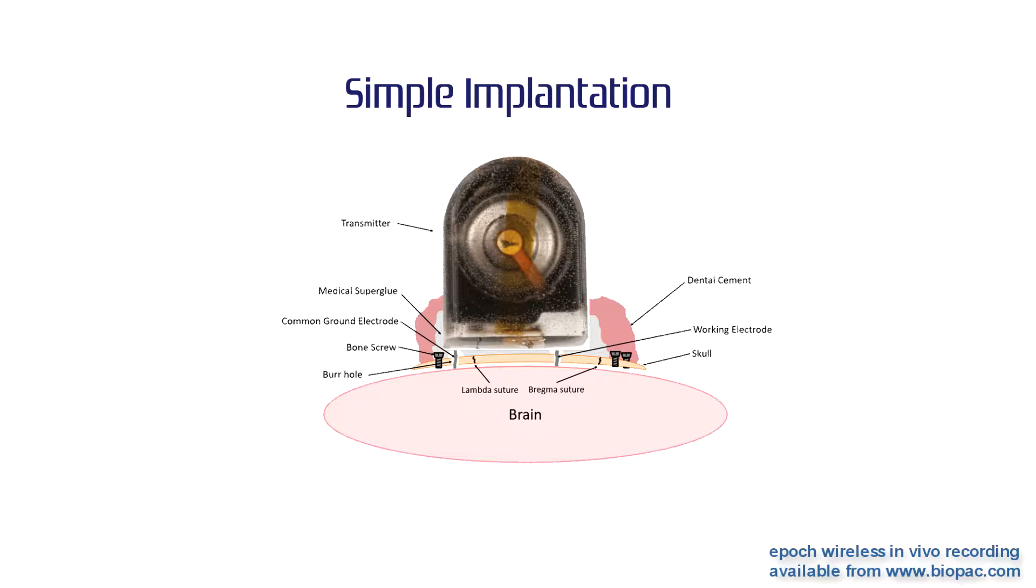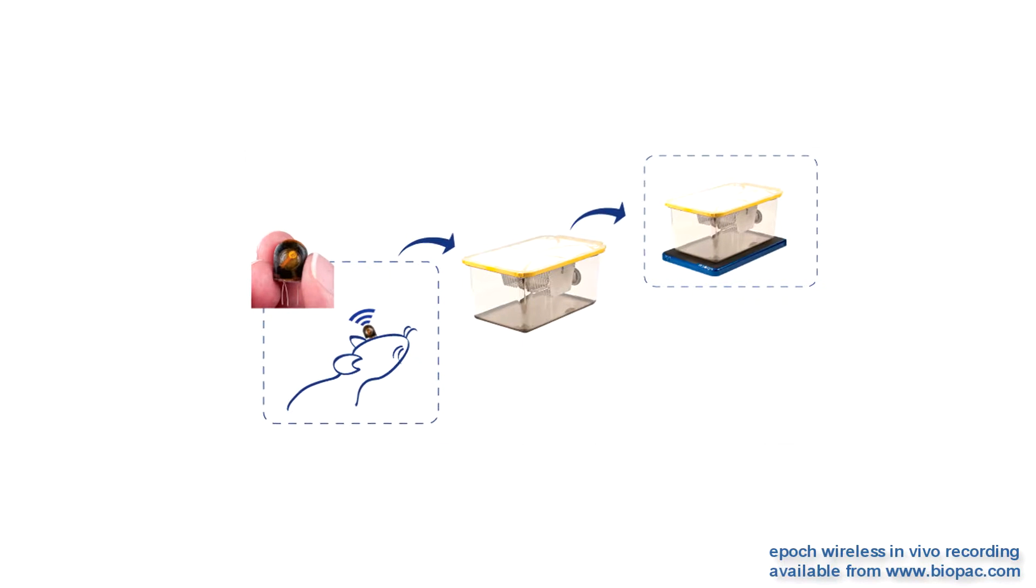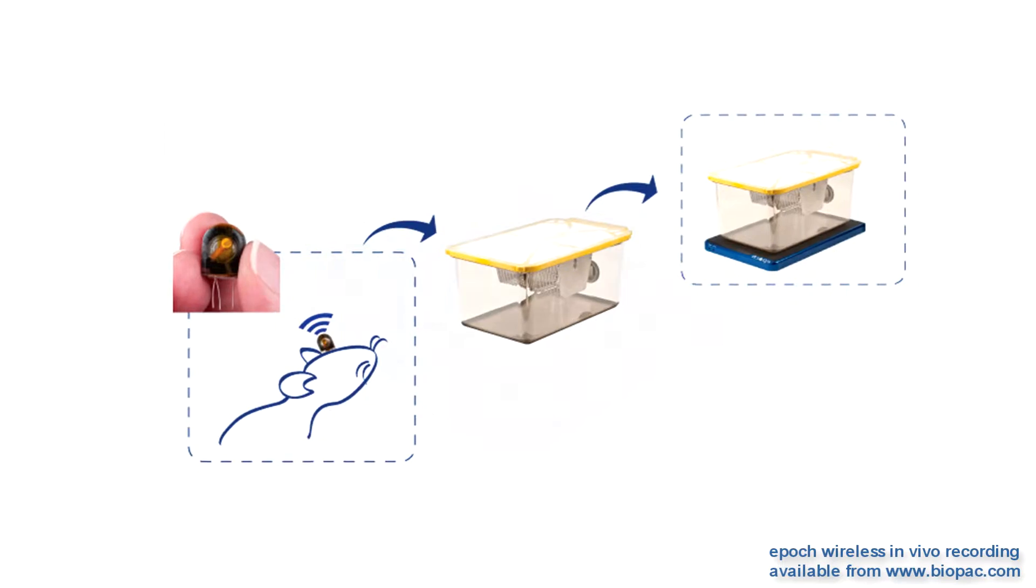Implanting the EPIC transmitter is a simple 4-step procedure, reducing surgery time to minutes. All EPIC transmitters amplify biopotentials and wirelessly transmit data to a receiver base placed under each animal cage.